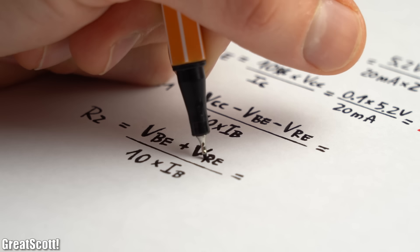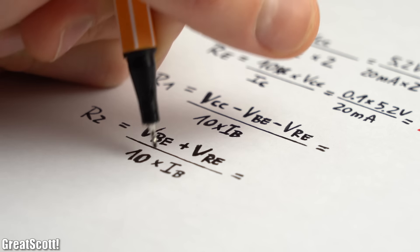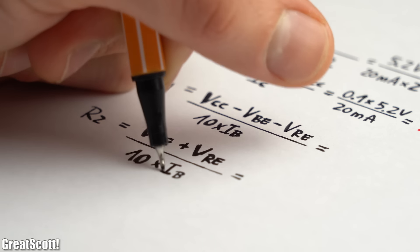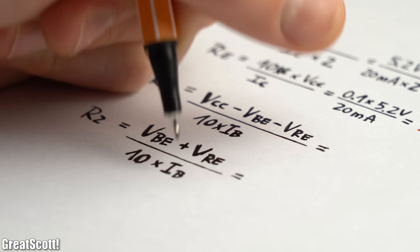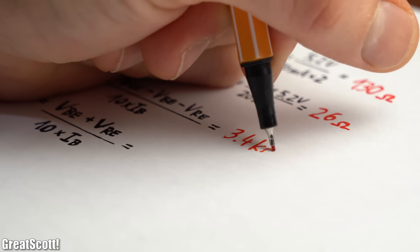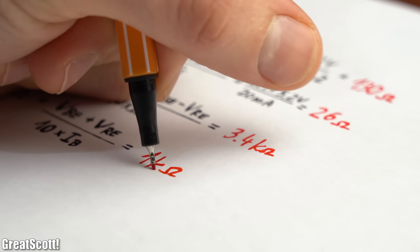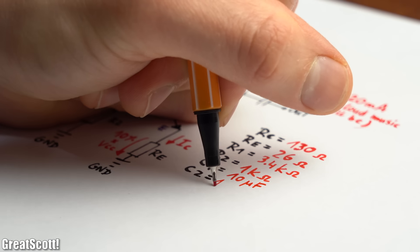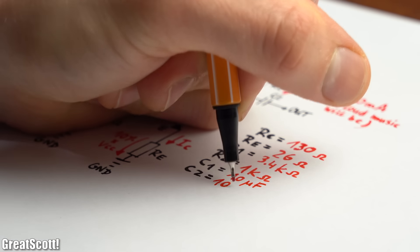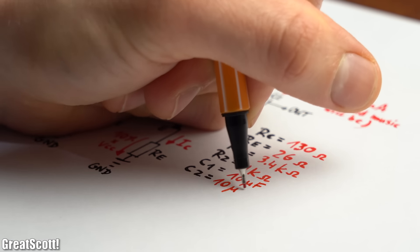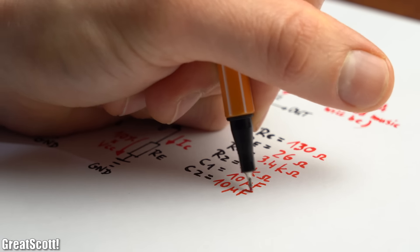The resistor values for R1 and R2 can then be calculated through the base current, supply voltage, and base ground voltage, which gave me values of 3.4K Ohms for R1 and 1K Ohm for R2. Last but not least, we can throw in some common 10µF capacitors for decoupling, and we are basically done.